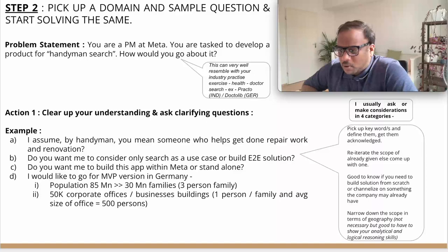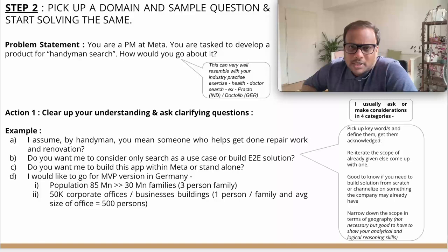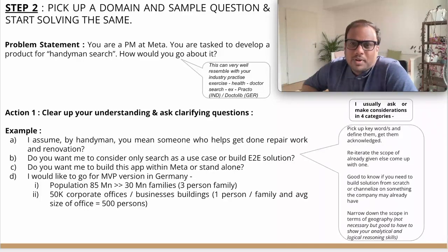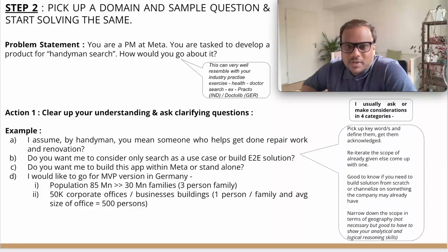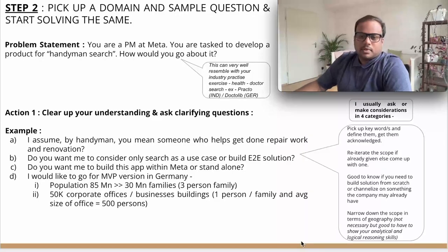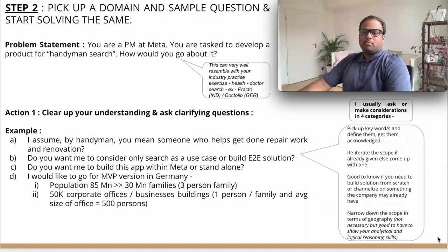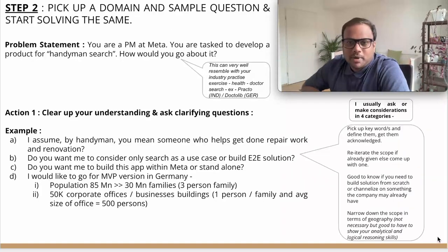Once you have this, the time is to move to the next step — picking up a domain and starting to solve sample questions for product execution or sense type of interviews. You remember we talked about those 10 steps available on the internet when someone asks you to solve for product sense type of questions. This is the step where we will peel those 10 steps into details with one real-life example and start solving from them. The example we will be talking about today is: you're a product manager at Meta and you're tasked to develop a product for handyman search. How would you go about it?